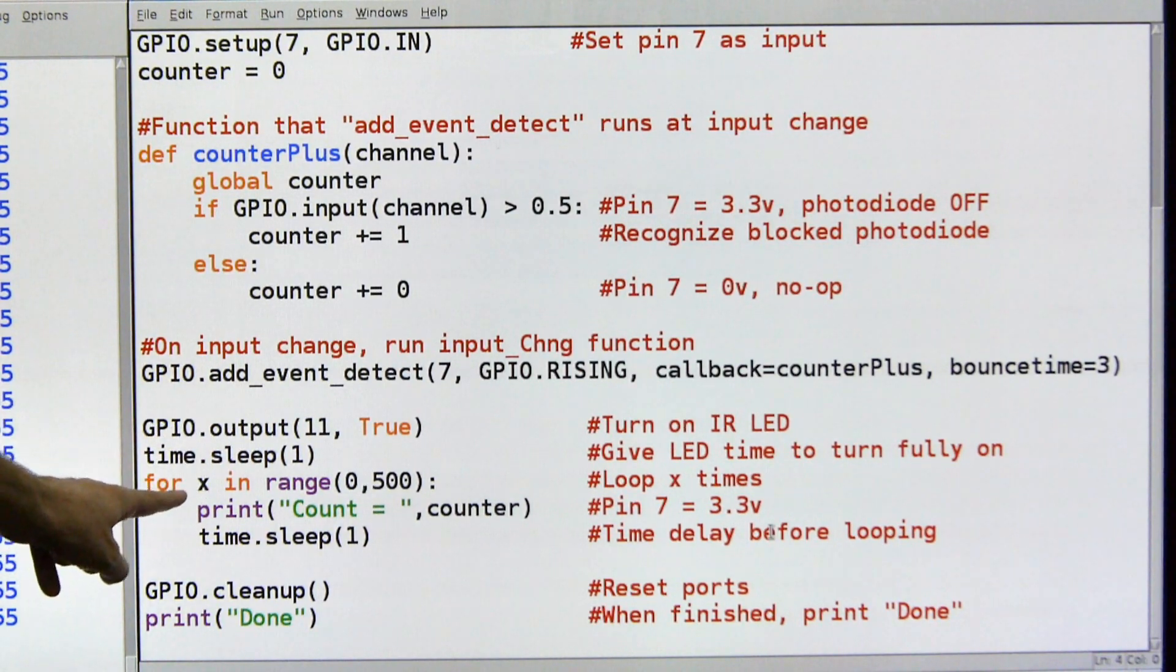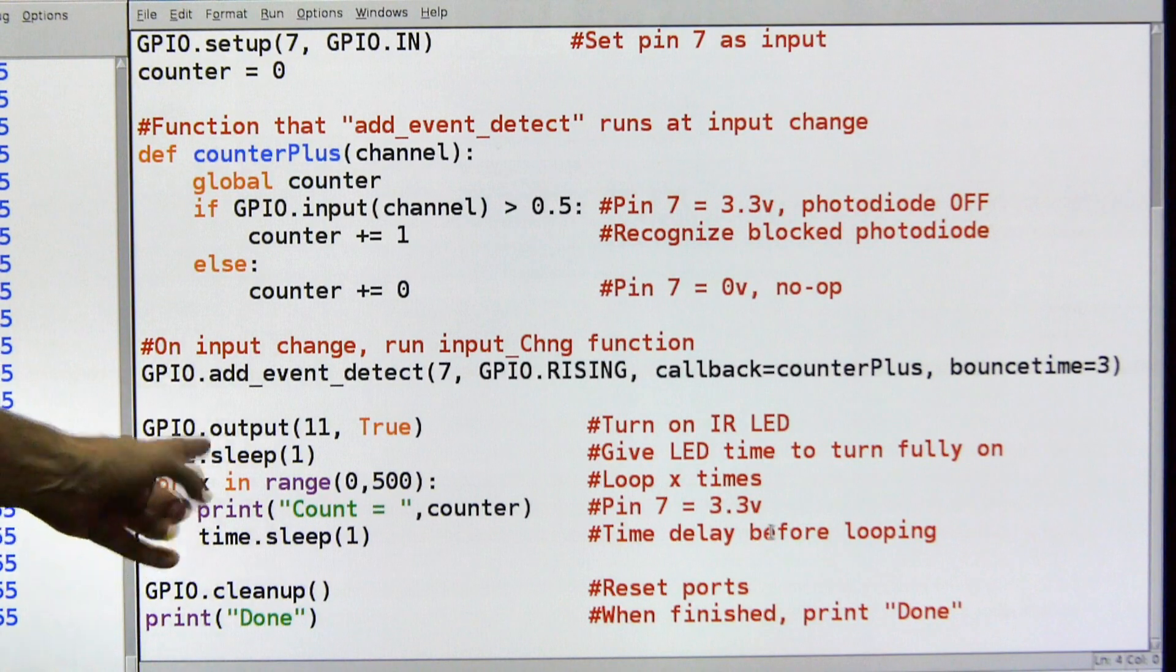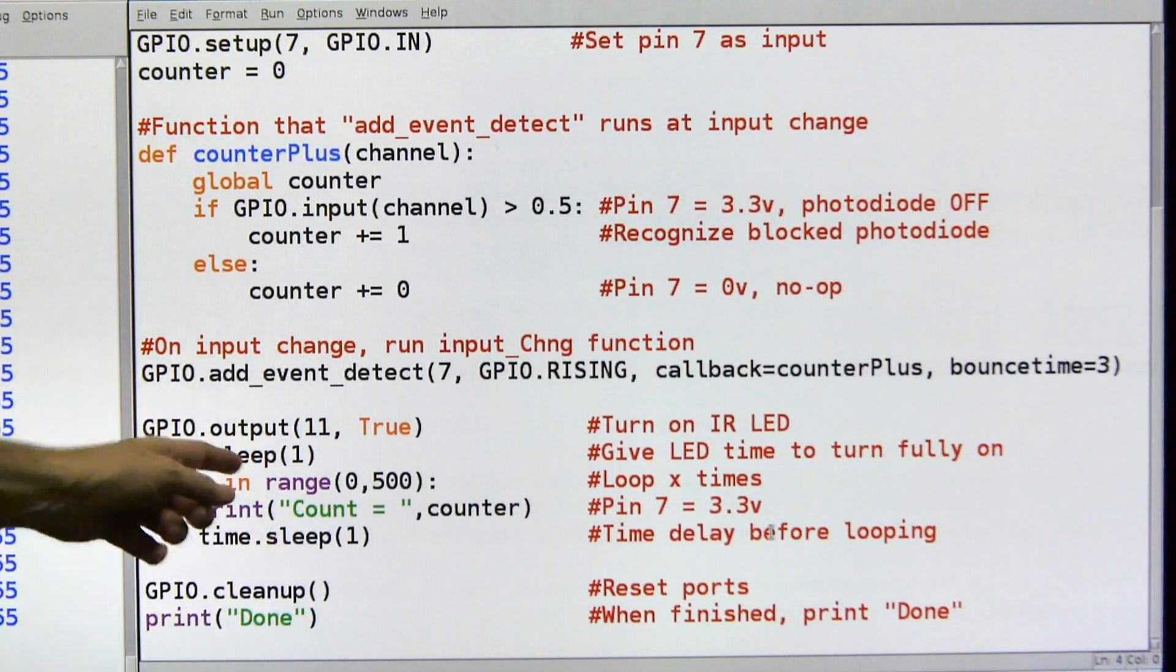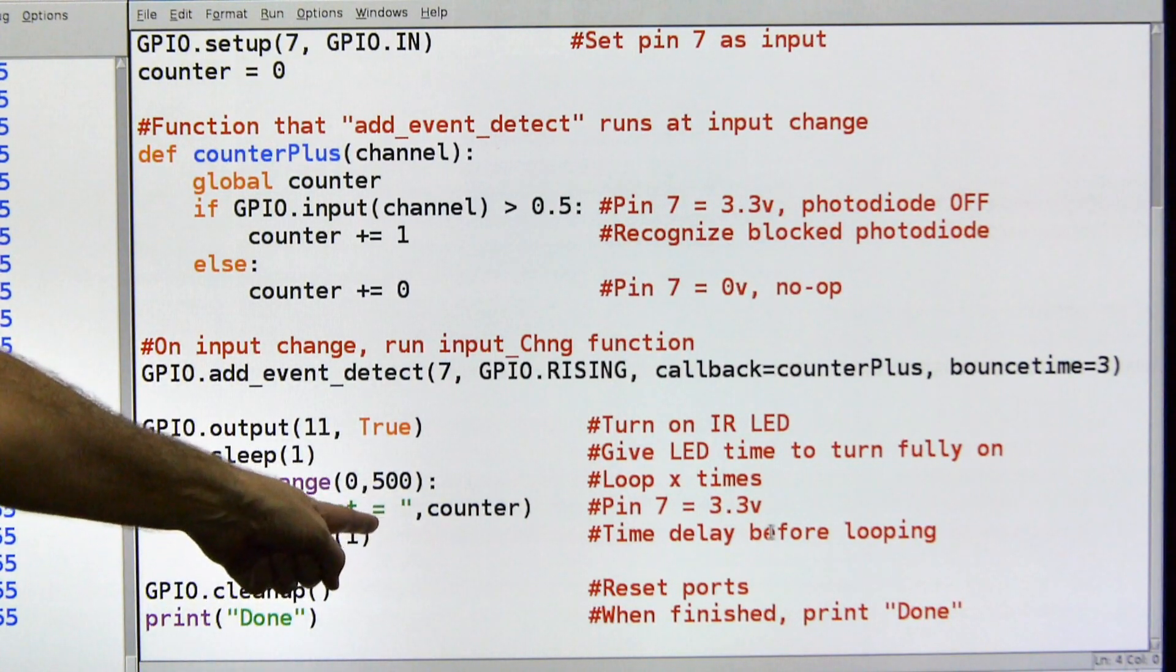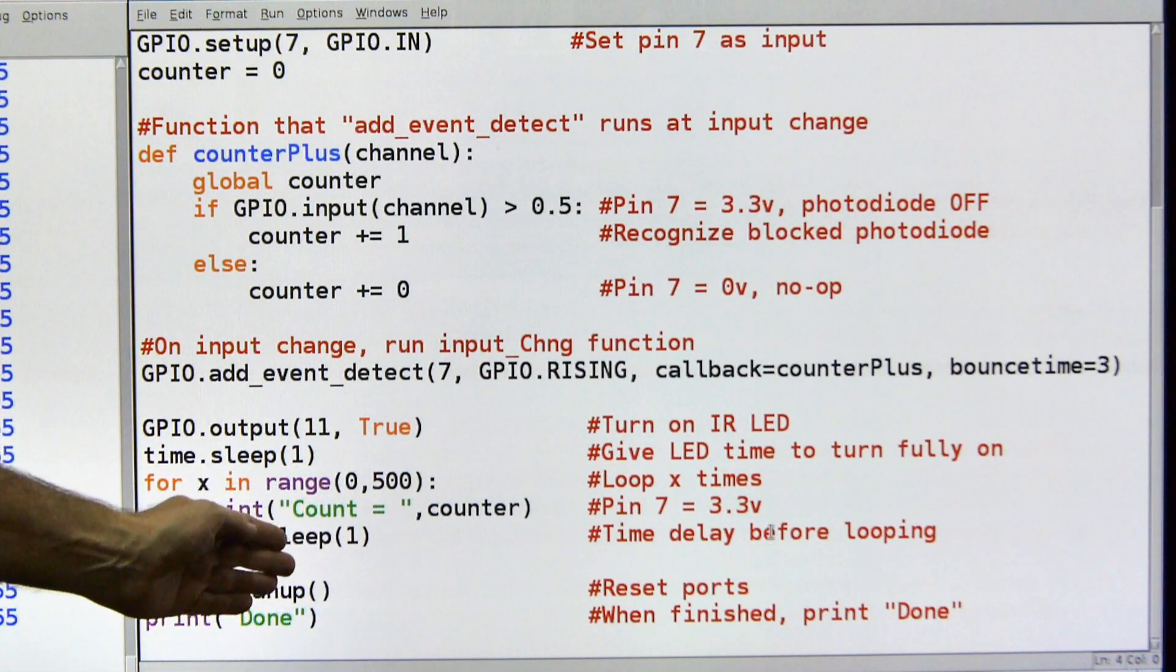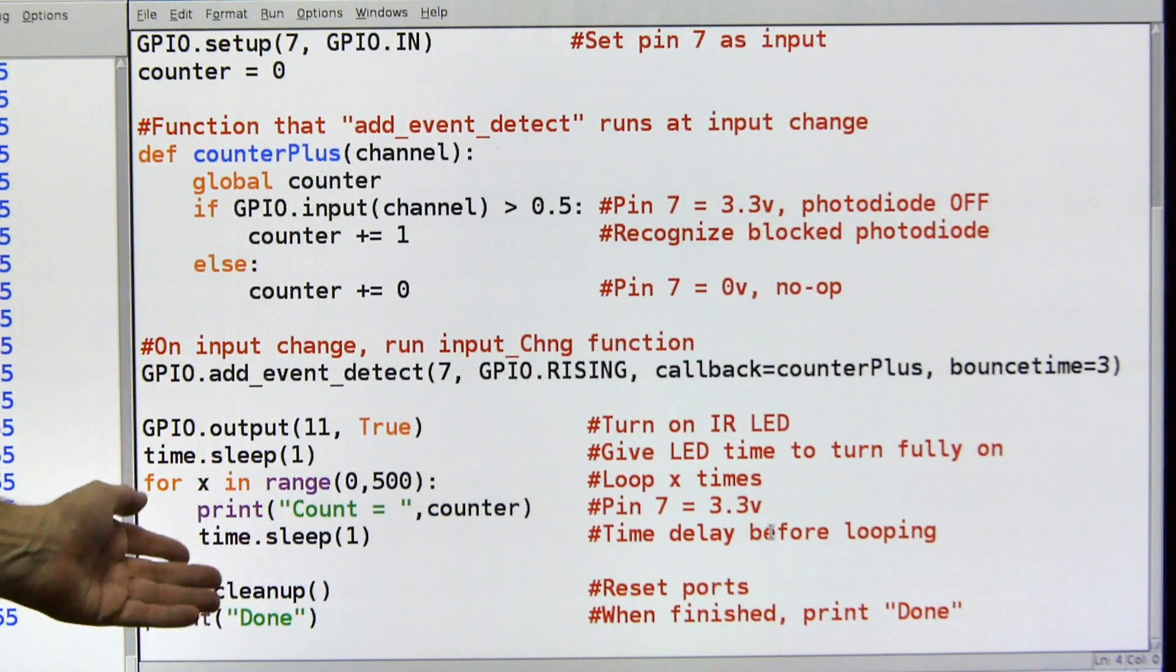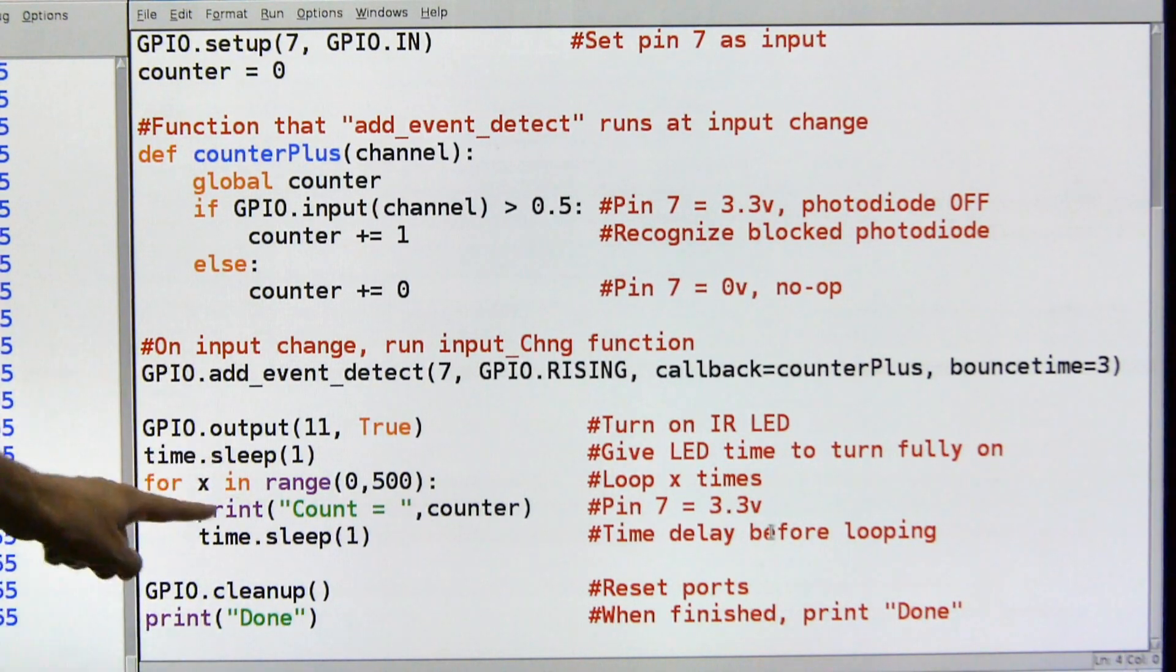Then I'm going to come down here and execute for X in the range of 0 to 500. You can do while true and make it an infinite loop, but I just did it for 500 times. Then I'm going to print the count, which we saw earlier. Just show the count and then the number of times that something has been counted. And then I'm going to sleep for one second. You can make this one second much shorter and you could report more often, but I figured reporting once a second is okay for this demonstration.